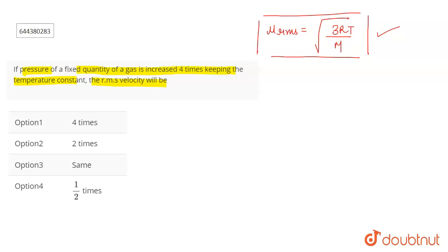So therefore, as from the formula you can understand that it does not depend on the pressure. And you're keeping the temperature as a constant, and the question says that if you increase the pressure by four times, what will happen to the root mean square velocity?